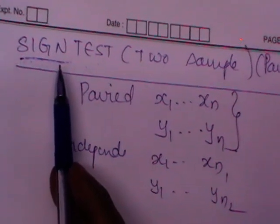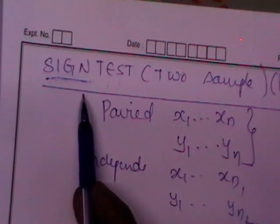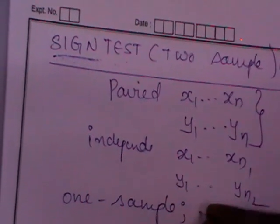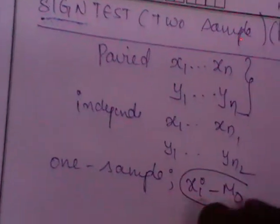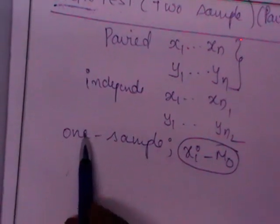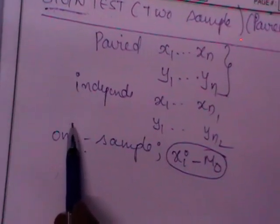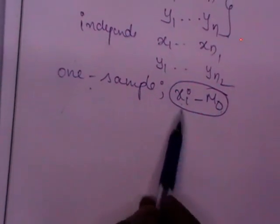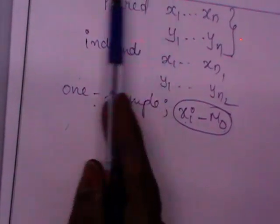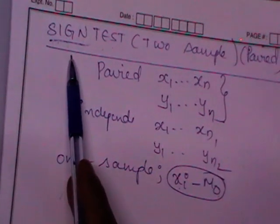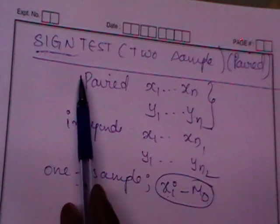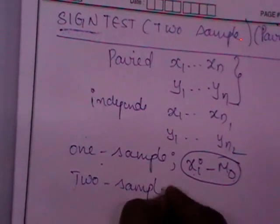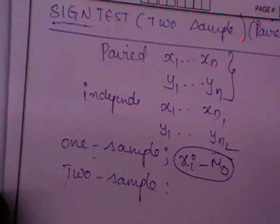For a one sample case, how are the differences found? You are subtracting Xi minus the median, that is Xi minus M-naught. For sign test for two samples, we are also going to use the test statistic as the minimum of positive and negative signs, but for the two-sample case we do not use Xi minus M-naught to identify the signs.